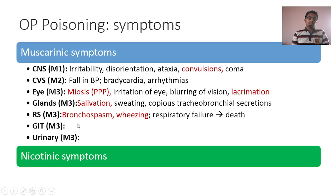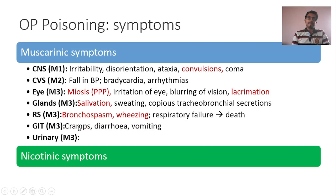In the GIT, the parasympathetic system is involved in rest-and-digest type of response. Normally, parasympathetic system activation will lead to increase in intestinal movements. Even in OP poisoning, there is increase in GIT movements leading to abdominal cramps, diarrhea, and vomiting. In the urinary system, there is increased urine outflow due to parasympathetic activation. Even in OP poisoning, there is involuntary urination. All these are muscarinic symptoms.